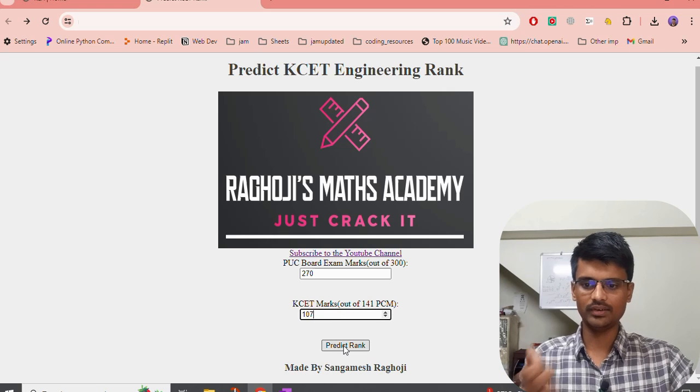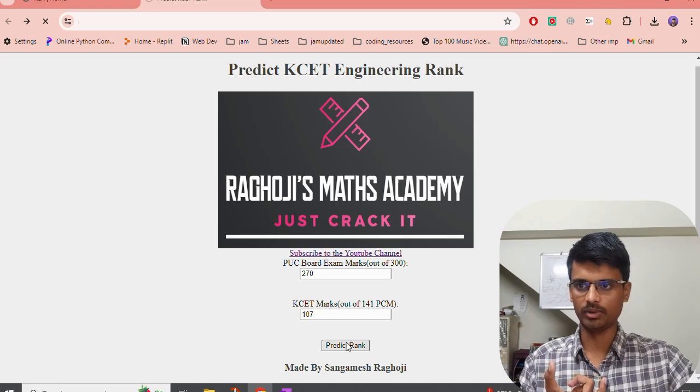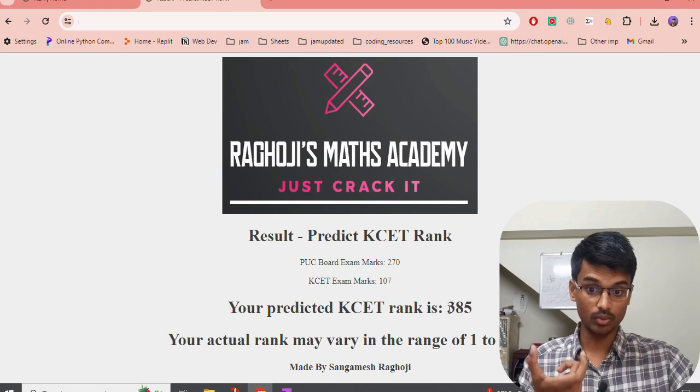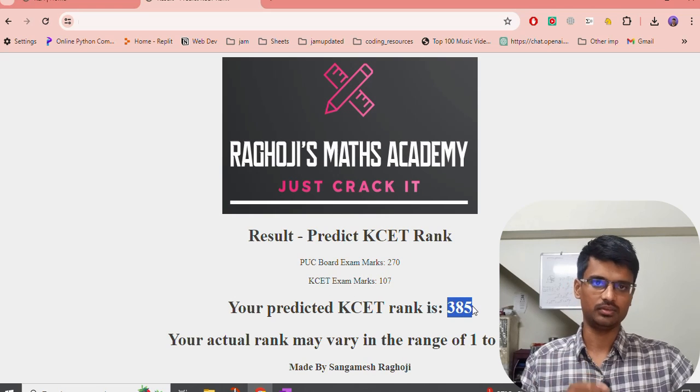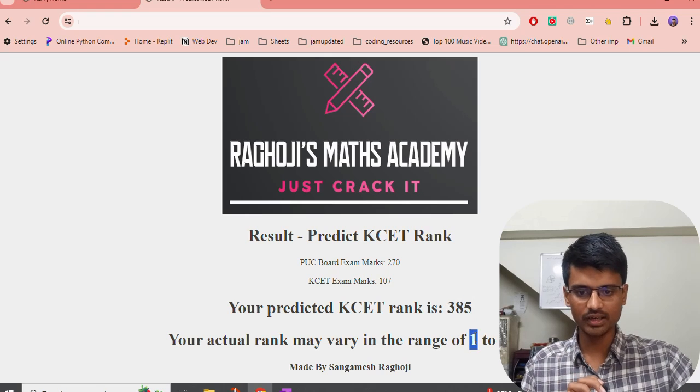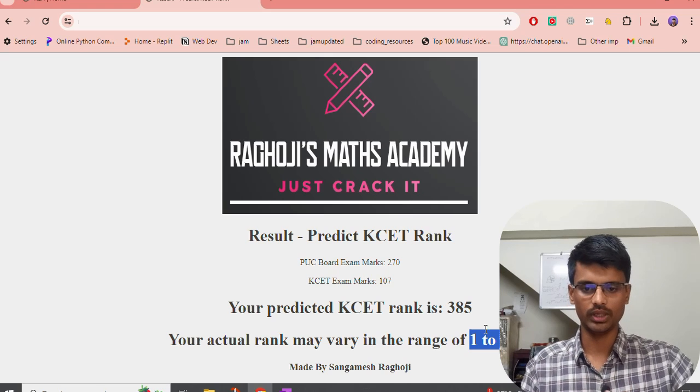You can go and read about this also. The logic behind the tool is bell distribution curve. I am reminding it last time. So don't take this as your actual rank. It is just an approximation. Based on this, you can plan. You can see for which colleges you can get. You can research on those colleges, which branch you can go. Those kind of things it will help you.